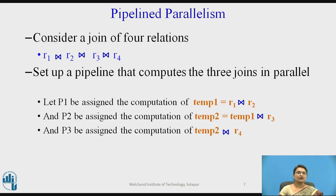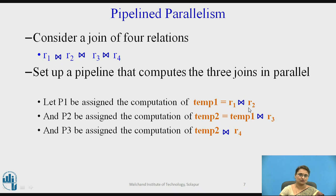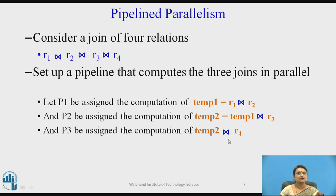Consider an example: the join of 4 relations R1 joins with R2, joins with R3, joins with R4. If we want to apply parallelism to this query, we take the join of R1 and R2 and store it in temp1. As soon as temp1 is generating results, it is given to the next join operation, so temp1 joins with R3 and the result is stored as temp2. As soon as temp2 is generating results, it is given to the join operation with R4. So these three join operations are working in parallel at processors P1, P2, and P3.